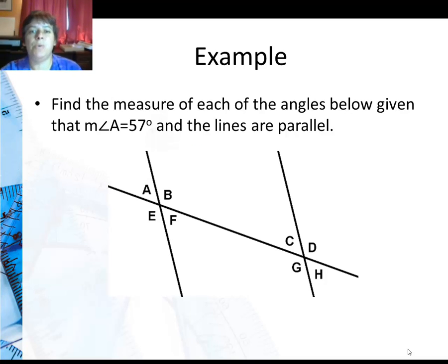Here's an example. I want to find a measure of each of the angles below given that the measure of angle A is 57 degrees. And I forgot to add this in the wording, the lines are parallel. So we're only working with parallel lines cut with a transversal today. Apologize for leaving that out. So I'm putting in the 57 degrees.